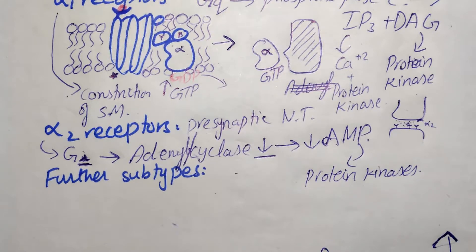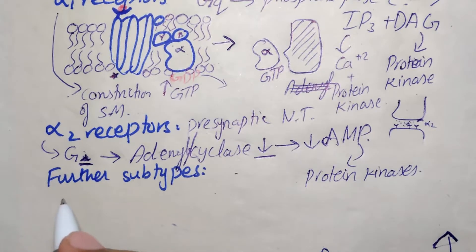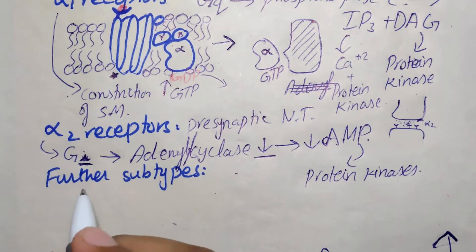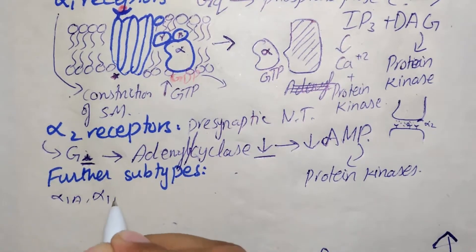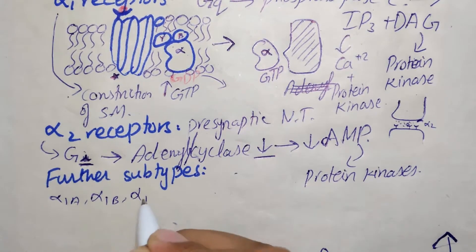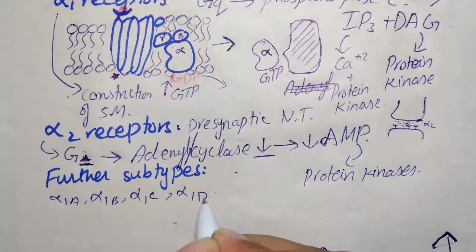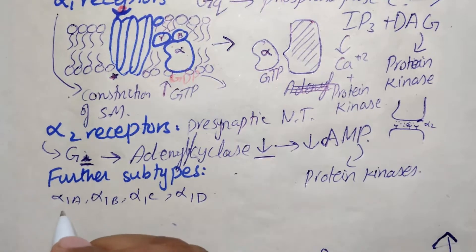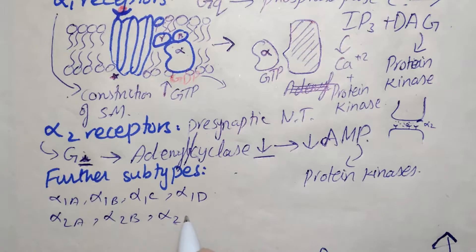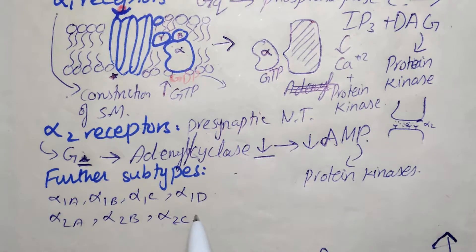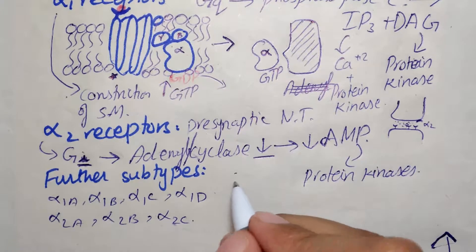There are further subdivisions of alpha 1 and alpha 2 receptors. Alpha 1 receptors are divided into alpha 1a, alpha 1b, alpha 1c, and alpha 1d subtypes. Alpha 2 receptors are divided into alpha 2a, alpha 2b, and alpha 2c. This extended classification is necessary for understanding the selectivity of some drugs.